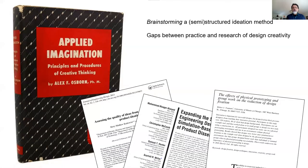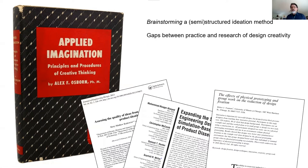We look at the book Applied Imagination, the first edition by Alex Osborne, 1953, where he talks about the origins of brainstorming in the 1930s as a semi-structured ideation method. The paper works around the gaps between practice and research of design creativity.